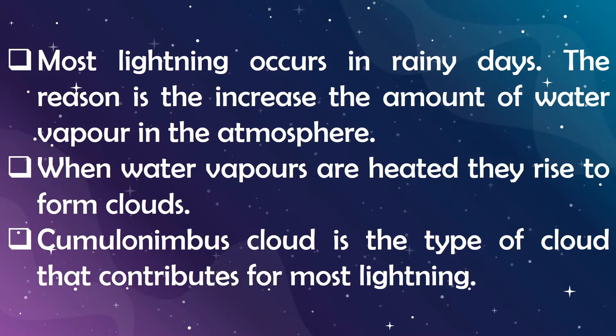There is a cloud called Cumulonimbus and it is the main cause for these lightning accidents. It is about 15,000 meters from the ground. Cumulonimbus is a dense, towering vertical cloud, forming from water vapor carried by powerful upward air currents.